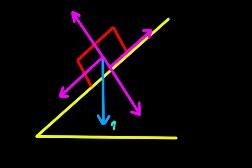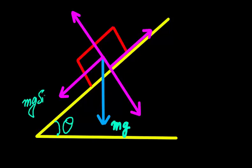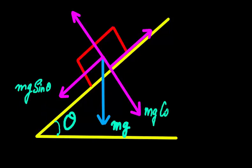The blue colored arrow is the weight of this object, meaning mg. This inclined plane is making an angle theta with the horizontal. The pink colored arrows are the components of mg — this is mg sine theta and this is mg cos theta. The opposing force is friction having maximum static friction value, and this is the normal reaction.